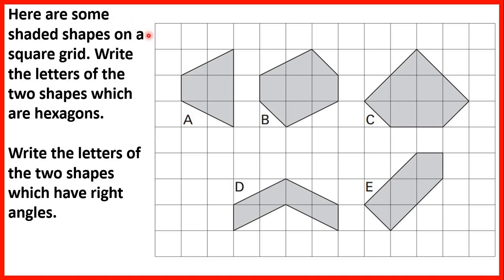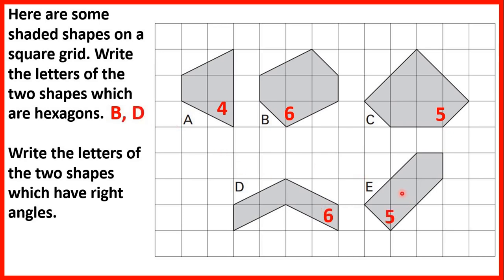Here are some shaded shapes on a square grid. Write the letters of the two shapes which are hexagons. Remember a hexagon is a six-sided shape, so what we need to do is count the sides. A has 4 sides, B has 6 so that's one of our hexagons, C has 5 so that's a pentagon, D has 6 sides so that's our other hexagon, and E has 5 sides so that's a pentagon.